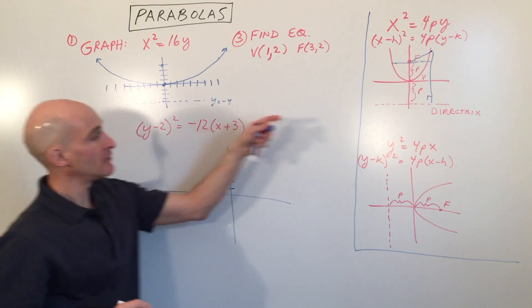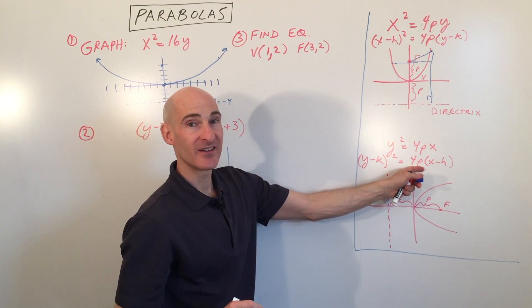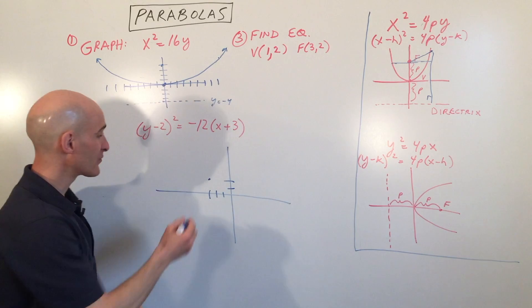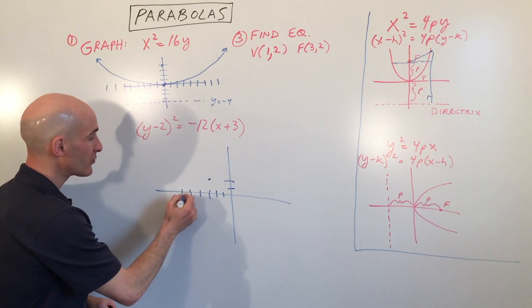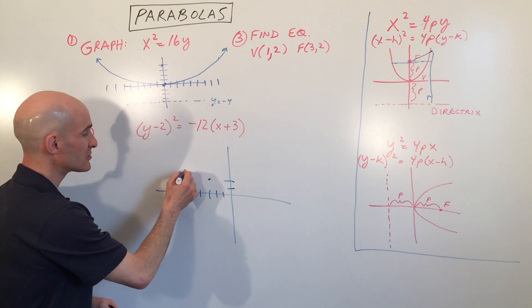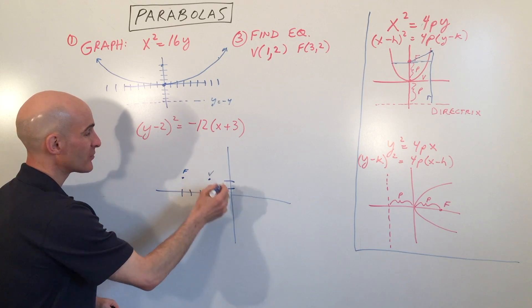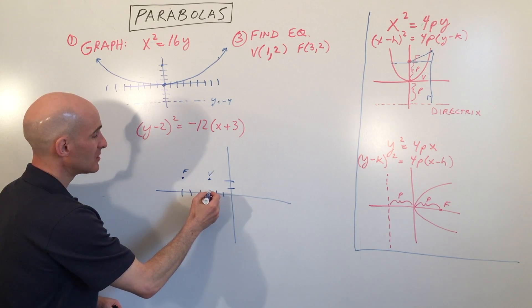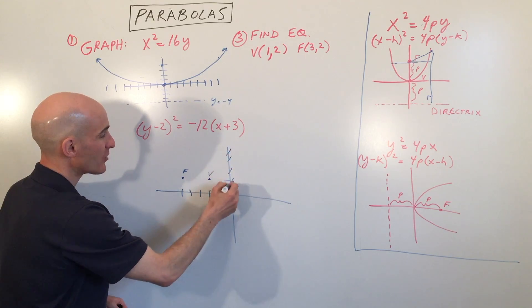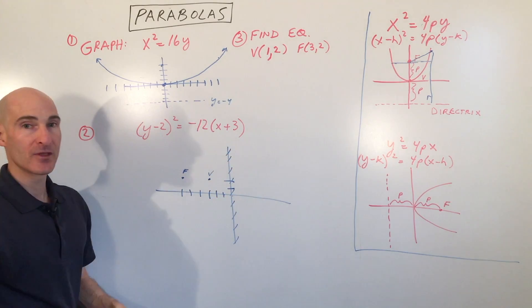Now we know it's going to be opening to the left. And if I set 12 equal to 4p, that means p is -3. So I'm going to go 1, 2, 3. So there's the focus. There's the vertex. And if I go 3 the other direction, 1, 2, 3, there's the directrix.